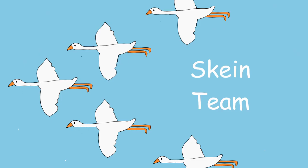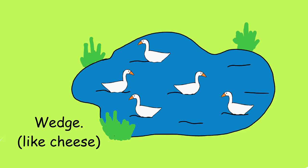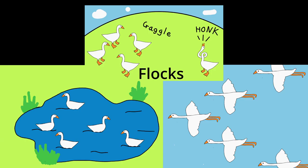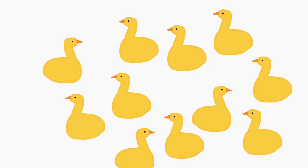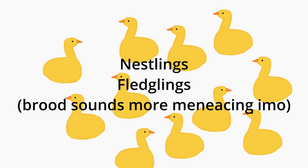Then there are other terms like skein and team, which are usually for referring to a group of geese in flight. There's also a wedge of geese, which is used for a group of geese packed closely together either in the sky or on water. There are still about a dozen more terms for overly specific scenarios. Simply calling a group of geese a flock applies no matter where they are. Baby geese are called goslings, and the most common term for a group of goslings is a brood. You can still apply gaggle and flock as you see fit, or use generic bird terms such as nestlings or fledglings — all of these are fine.